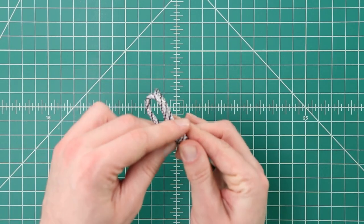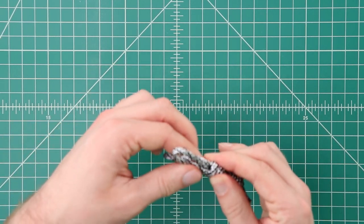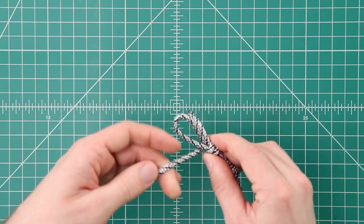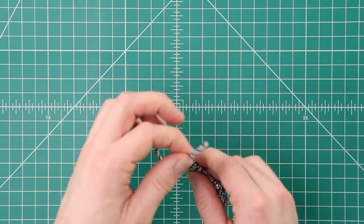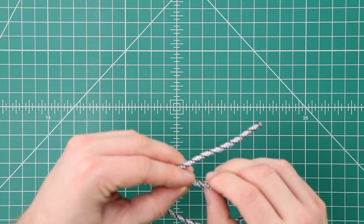And then it's going to go around one more time. We get a nice loop and up through it. And then you just tighten down that knot.